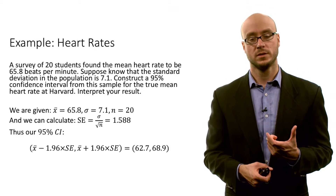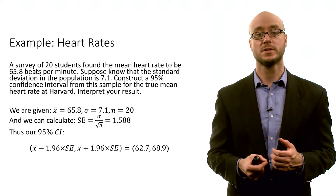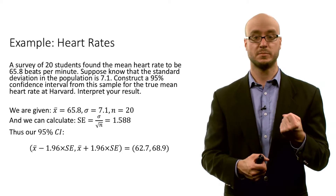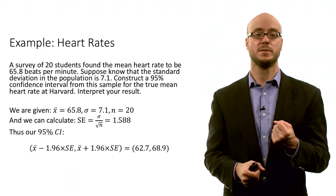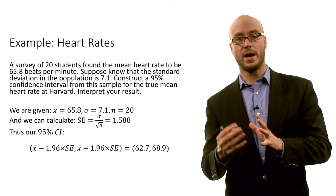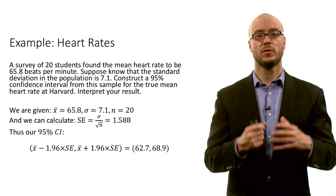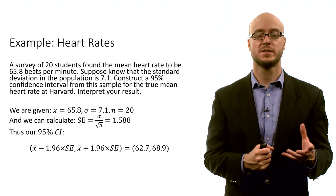The 95 percent confidence interval is designed to capture 95 percent of the sample means around the true population mean mu, which we don't know. To do that, we multiply the standard error by 1.96 — both positive and negative values. So we take our sample mean, subtract 1.96 times our standard error to find the lower bound, and add 1.96 times the standard error to find the upper bound. We get this interval of 62.7 to 68.9.